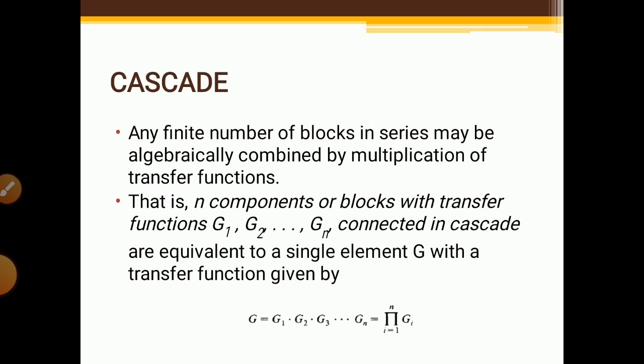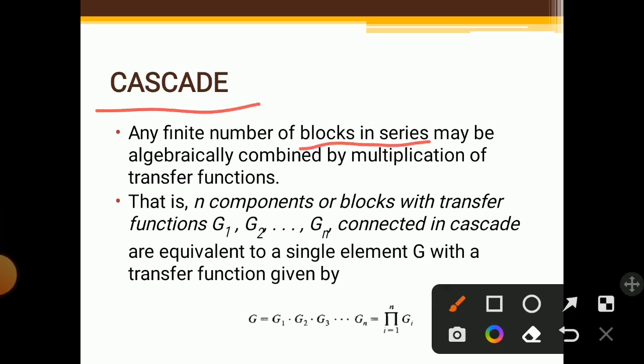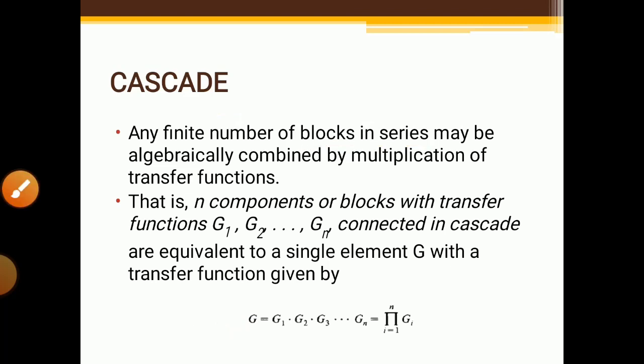The first simple form is cascade, meaning blocks connected in series. When blocks are connected in series, the equivalent is the multiplication of the blocks. Suppose there are n blocks with transfer functions G1, G2, G3 up to Gn. The final equivalent single block will be G = G1 × G2 × G3 × ... × Gn. Note that multiplication of transfer functions is commutative: G1·G2 = G2·G1.